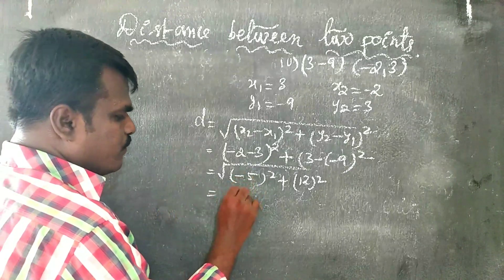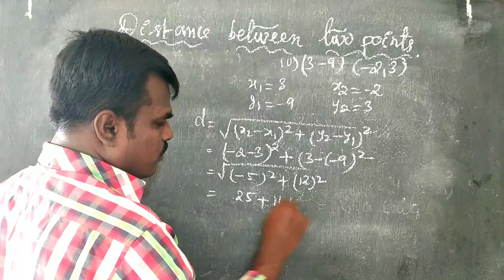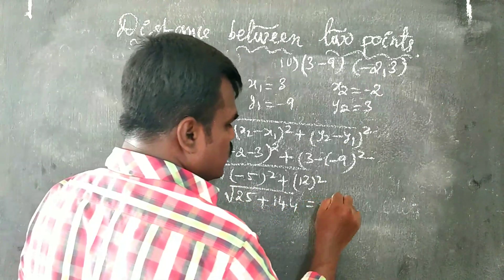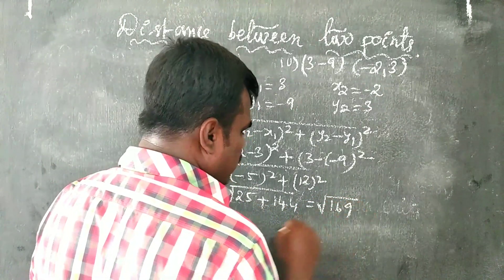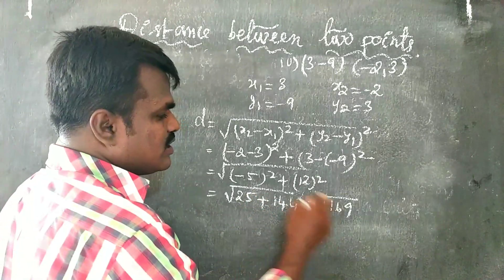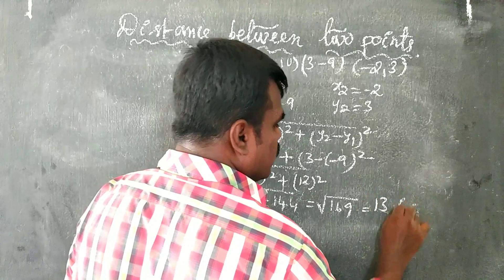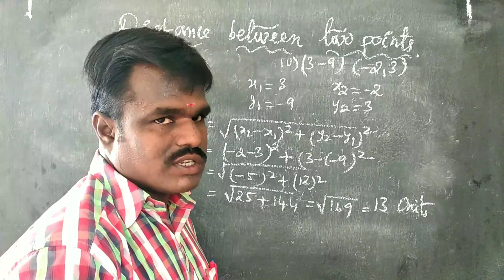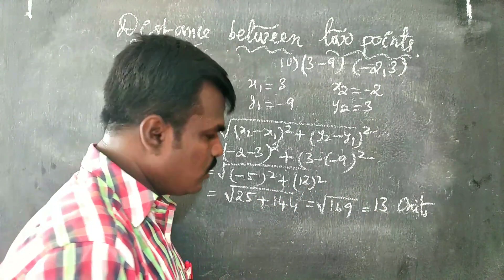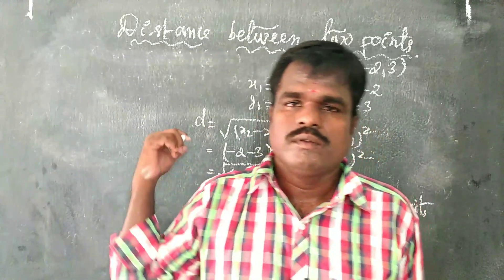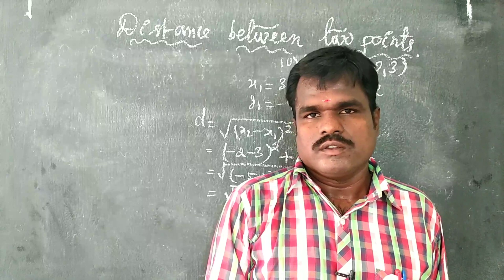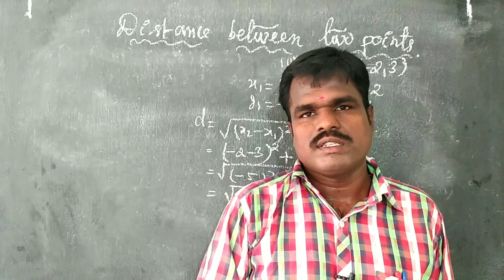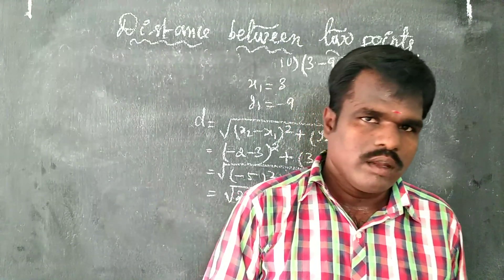Continuing: d = √(25 + 144) = √169 = 13 units. So the answer for the fourth sum is 13 units.